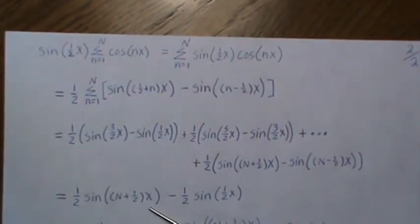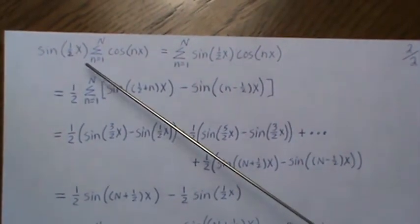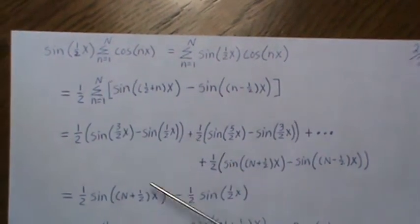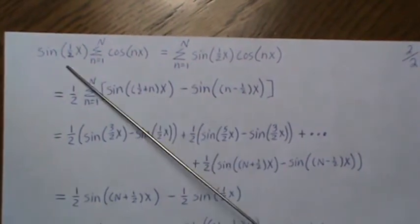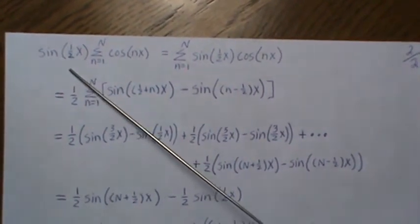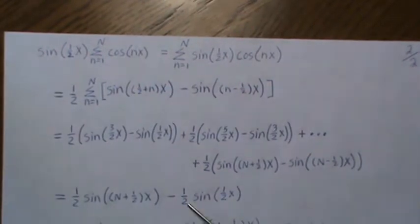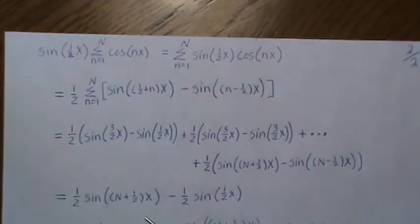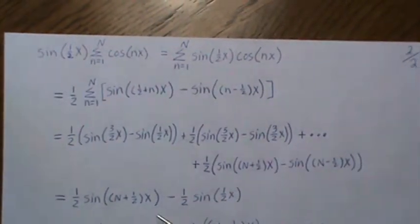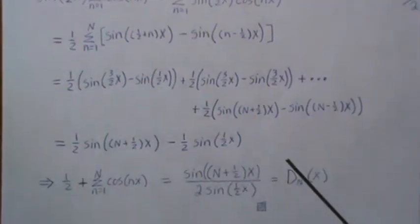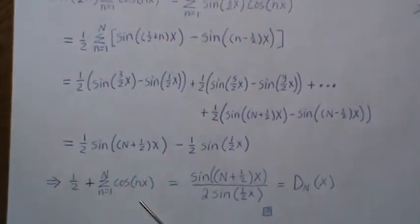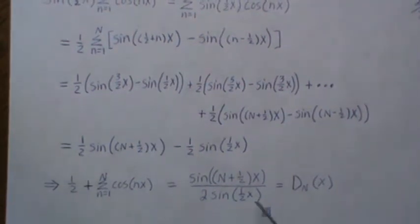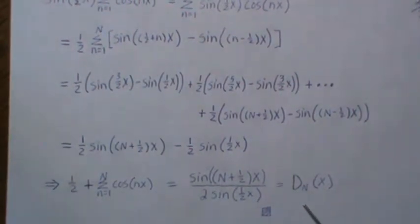Now if we look at this original sum and this, we can divide both sides by the sine of one-half x. So we get minus one-half here, and then whatever that division is, and then we take that plus to the other side and we get this. Now this is the Dirichlet kernel of size n, which can be written like this or like that—they're the same thing.